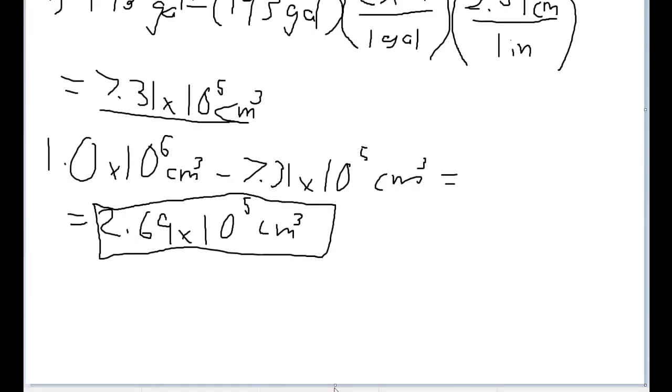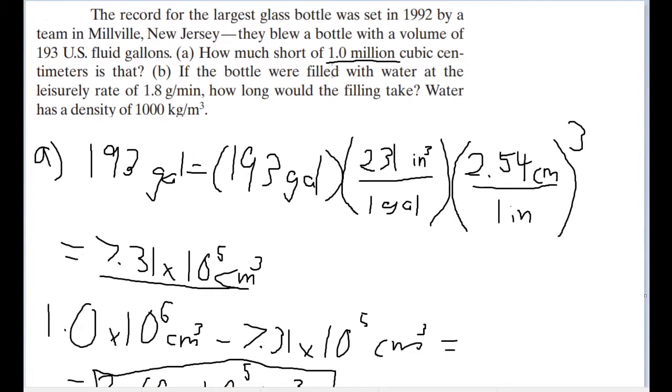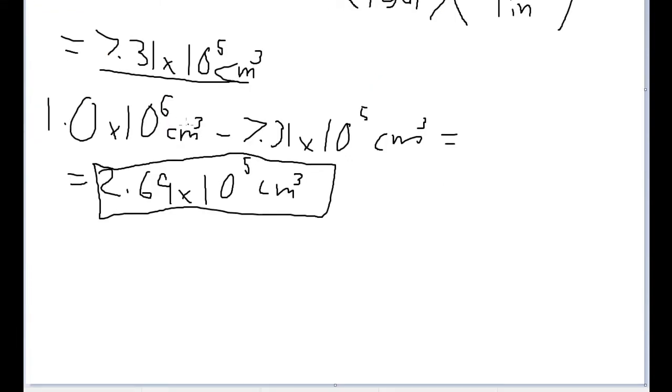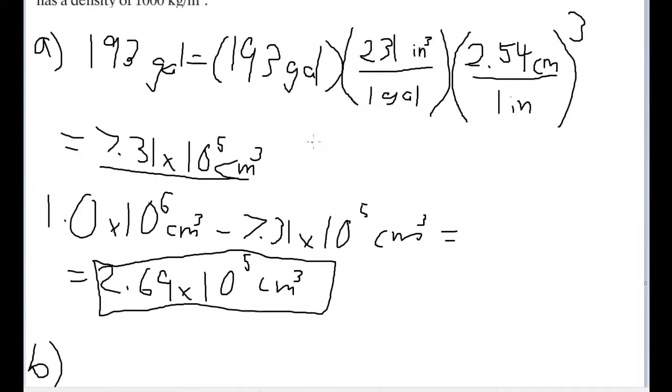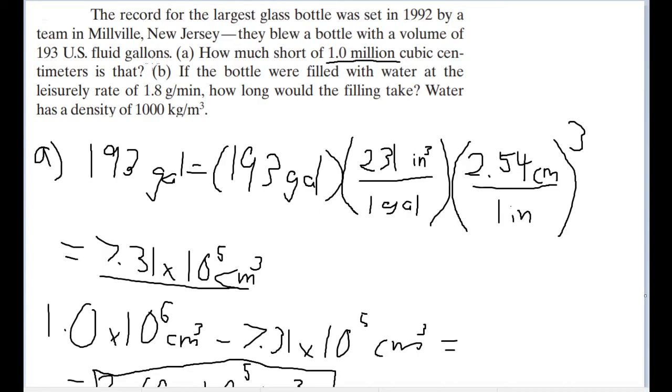Part B is a bit more involved. So what part B asks is, if the bottle were filled with water at the leisurely rate of 1.8 grams per minute, how long would it take to fill it up completely? And it gives us the density of water, which is a clue to us. So keep that in mind if the details are given that could be useful clues as to how to solve the problem. So we're given this rate here, we're given this rate of change in the amount of water in the bottle. And we want to compare that to the amount of water we have, or the amount of water we have and how long that would take.